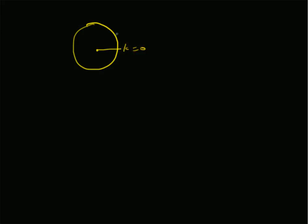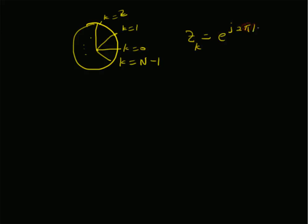On a circle of radius 1, we have k = 0, k = 1, k = 2 and so on up to k = N-1, where all these angles are equal. Therefore, we have N samples on this unit circle. That means Z_k = e^(j2πk/N), which are basically the roots of unity. Note that this magnitude is equal to 1.